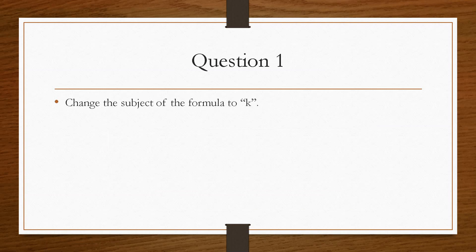So if we take a look at question number one, it asks us to change the subject of the formula to k. It gives us this expression here, where d equals k minus m over t. First thing that I'm going to do is I always write out the equation on the paper to start with, so I can play about with it.